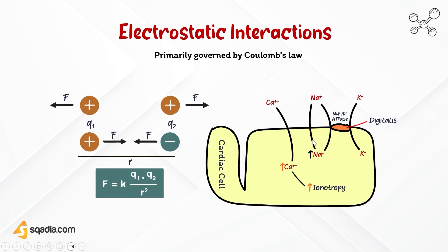A specific example of electrostatic interaction is the binding of digoxin — the active constituent of digitalis — to the sodium-potassium ATPase receptor. Digoxin is a cardiac glycoside used to treat heart failure and certain heart rhythm disorders. The drug molecule digoxin contains a positively charged cationic head group, which interacts with the negatively charged glutamate residues on the sodium-potassium ATPase receptor through electrostatic interactions.